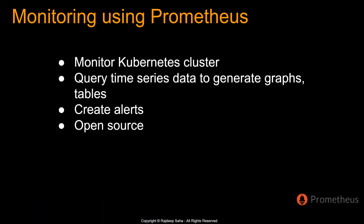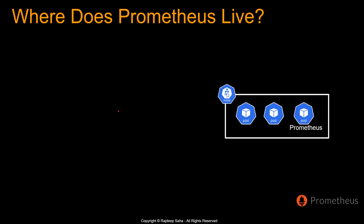Prometheus is a monitoring tool. Monitoring means checking memory usage, CPU usage, and creating alerts if something goes wrong. It saves data in a time series database — you can query that data to generate graphs and tables. It is open source. This tool runs as a daemon, meaning it runs within a pod inside the node — there will be a pod for Prometheus that sends data to the Prometheus server.